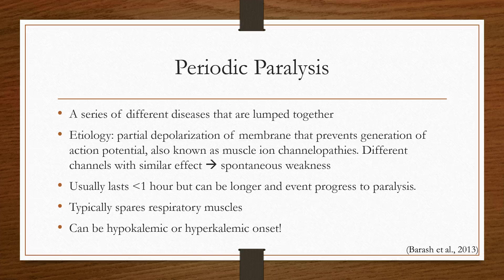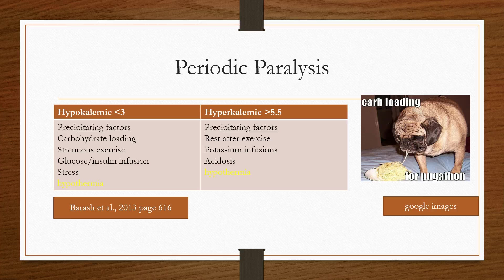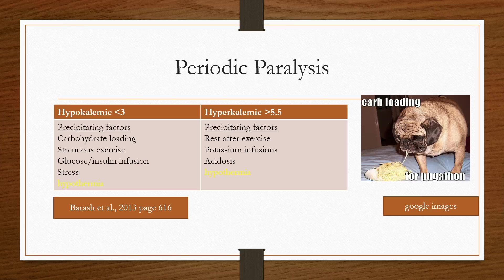Any channel can be affected — sodium, chloride — but typically it's potassium channels. Episodes can be triggered by hypokalemia or hyperkalemia depending on the type. Depending on which type your patient has, they may be sensitive to low or high potassium. For hypokalemic periodic paralysis, triggers include large carbohydrate loads leading to insulin release and intracellular potassium shifts, strenuous exercise, beta-2 agonists, and stress. For hyperkalemic periodic paralysis, avoid potassium infusions and any type of acidosis.